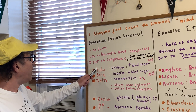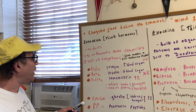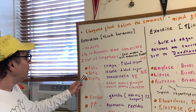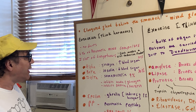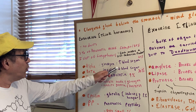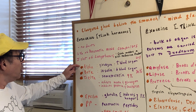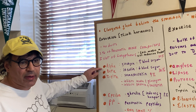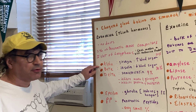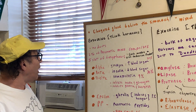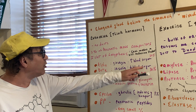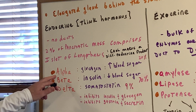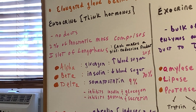For example, alpha cells make glucagon, which increases blood sugar. The beta cells make insulin, which decreases blood sugar. These are two guaranteed types of questions you're going to see on the exams, whether it's an MCAT or a DAT. As far as proportion goes, about 70% of those islet cells are beta cells, so the alpha and the beta make up the bulk.